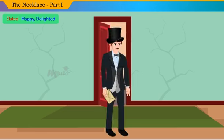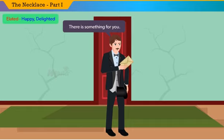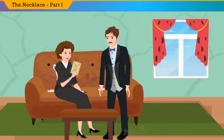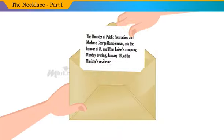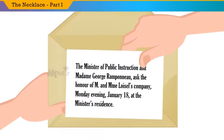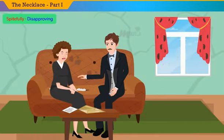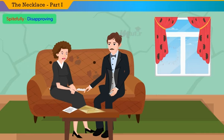One evening, her husband returned with a big envelope in his hand. She immediately took the printed card from him and opened the invitation. She read: 'The Minister of Public Instruction and Madame Georges Ramponneau ask the honour of Monsieur and Madame Loiselle's company, Monday evening, January 18, at the Minister's residence.' She threw the invitation spitefully at the table instead of being pleased, as her husband had hoped. With a troubled eye she stared at him and proclaimed with impatience, 'What do you think I might want with that?'